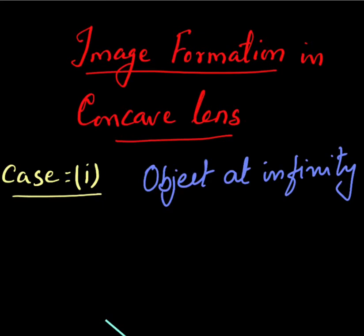Today we will see image formation in the case of a concave lens. There are only two cases to be done for concave lens image formation. The first one is when the object is kept at infinity, and the second one is when the object is kept beyond 2F. So let us start with Case 1: object at infinity.